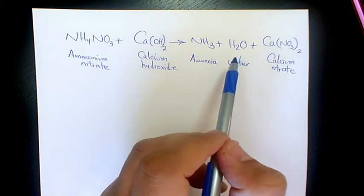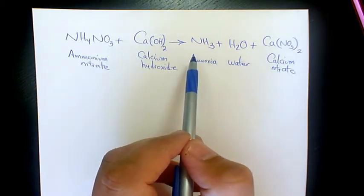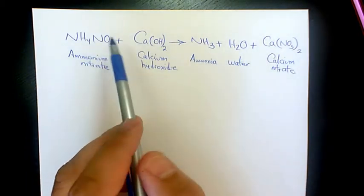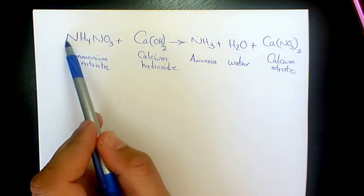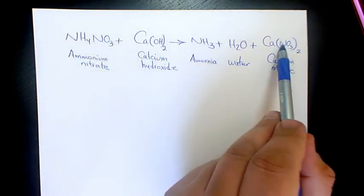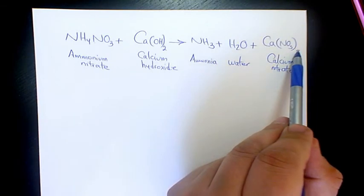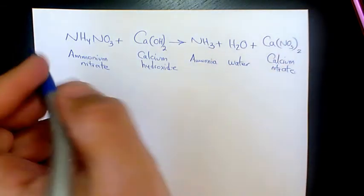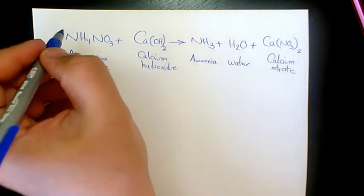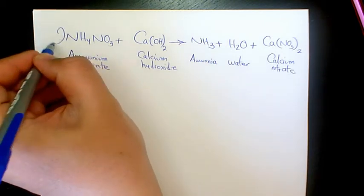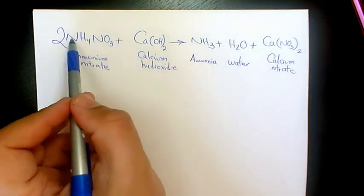Now let's look at nitrogen. Let's see how many nitrogen we have. We have 1, 2 on the left, and here we have 1, 2, and 3. So it's better to make 2 here. That's gonna be 2, and 2 times 2 is gonna be 4, and here we have 2.